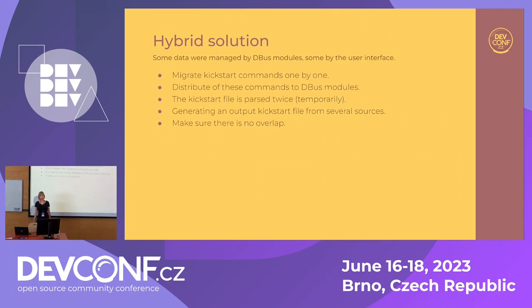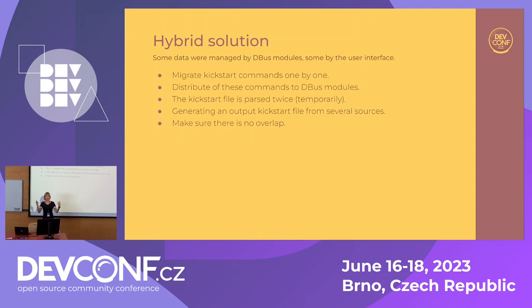What we had and have for all these years was a hybrid solution, because some Kickstart commands were migrated to DBus modules but a lot were still handled by the user interface. That created interesting challenges: you needed to take a Kickstart file, tear it to pieces, send it to the right components, collect feedback about validation errors, and then later collect new pieces and generate an output Kickstart file. We also had to make sure there was no overlap — that we didn't forget to remove management of a Kickstart command from the UI while it was already handled by a DBus module. We wrote a lot of unit tests for that.